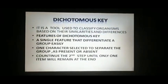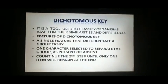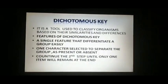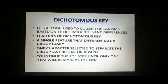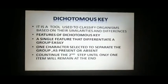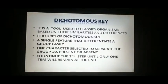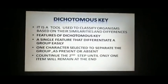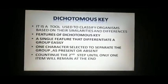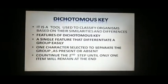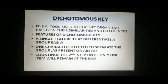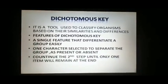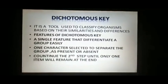So what is a dichotomous key? It is a tool used to classify organisms based on their similarities and differences. Its features are: first, a single feature that differentiates a group easily is selected; one character is selected to separate the group as present or absent — for example, with arm or without arm. Then continue each step until only one item remains at the end. These are the features of the dichotomous key.